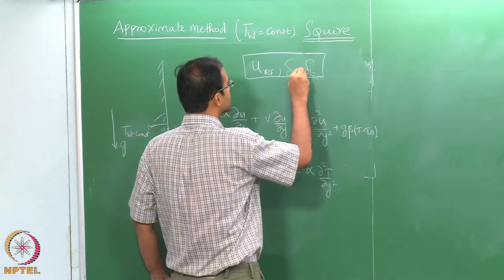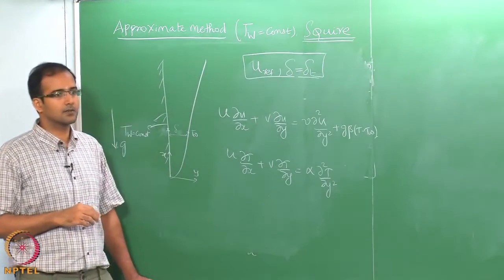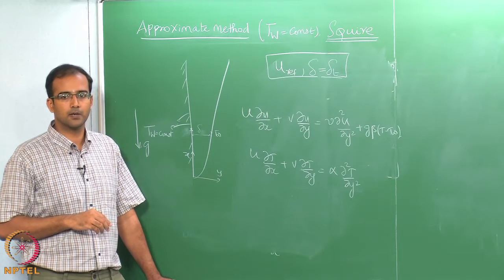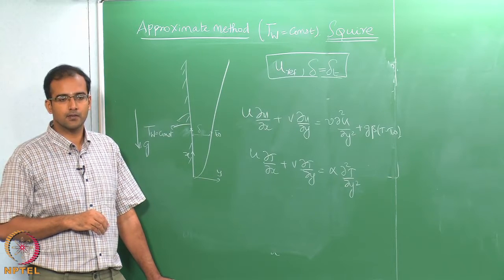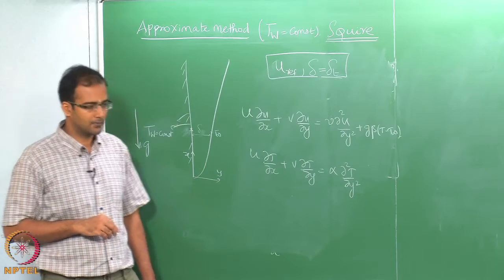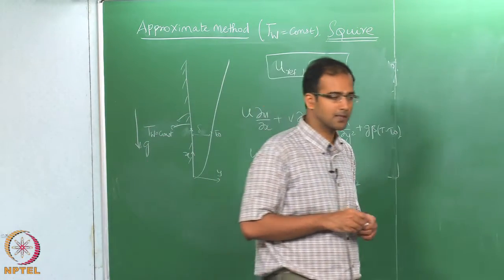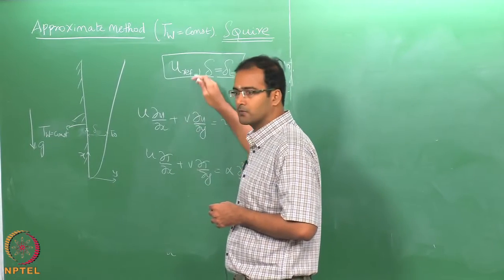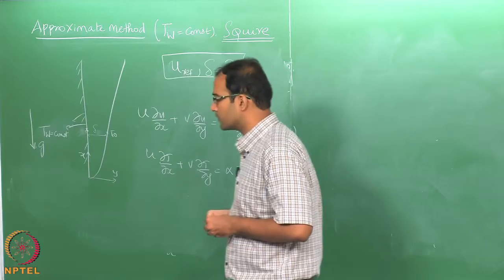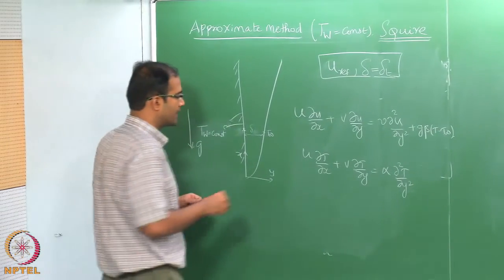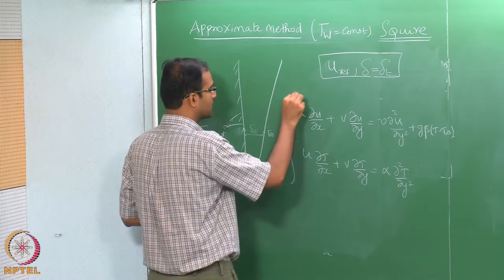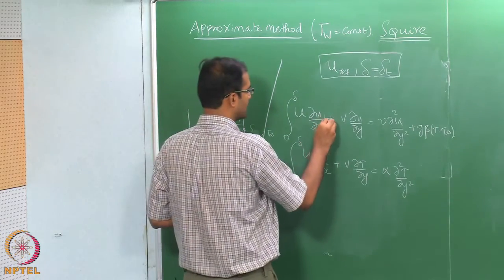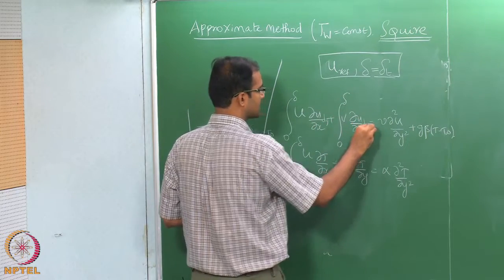Squire made a simple assumption that since natural convection for gases involves Prandtl numbers approximately around 1, it is reasonably safe to approximate delta equal to delta_T. This reduces the number of unknowns to match the number of equations. This is an approximation but we will see that it is still close to the exact solution. Since delta equals delta_T, we integrate both the momentum and energy equations between limits 0 to delta. We also need to write down and integrate the continuity equation to relate the velocities.